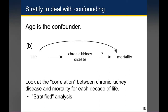We already established that age is a confounder of the relationship between chronic kidney disease and mortality. So how could we do a stratified analysis that would give us a better answer of whether chronic kidney disease itself raises your risk of death? In the unadjusted analysis, we simply looked at a correlation between chronic kidney disease and mortality. Another way that would take into account the confounder of age would be to stratify our analysis based on age — for example, looking at the relationship between chronic kidney disease and mortality for each decade of life.